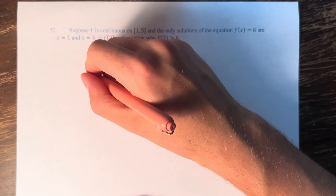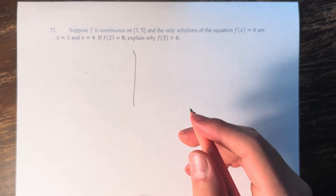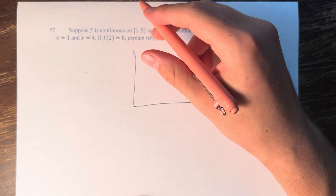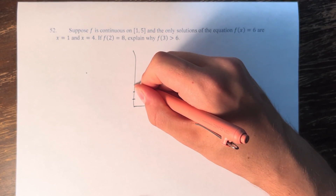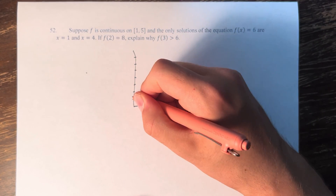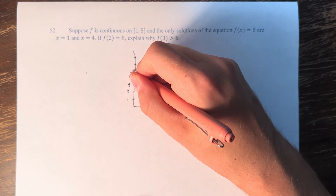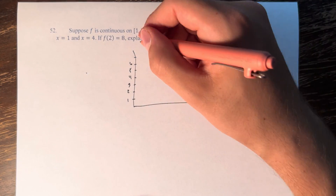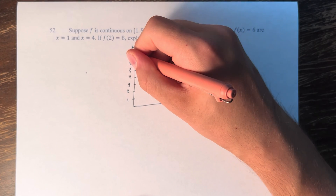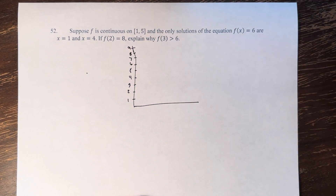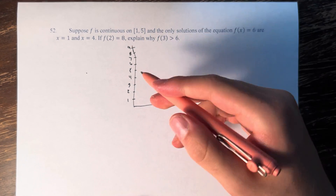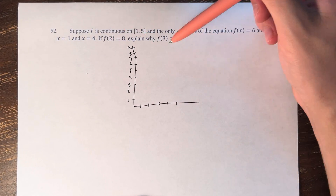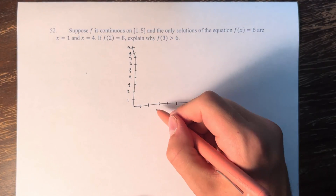So this is an application of the intermediate value theorem, but it's a little bit confusing, so we're going to graph it first. We're looking at the interval from 1 to 5 on the x-axis: 1, 2, 3, 4, 5. The y values we care about are 6 and 8, so I think we have our bases covered.